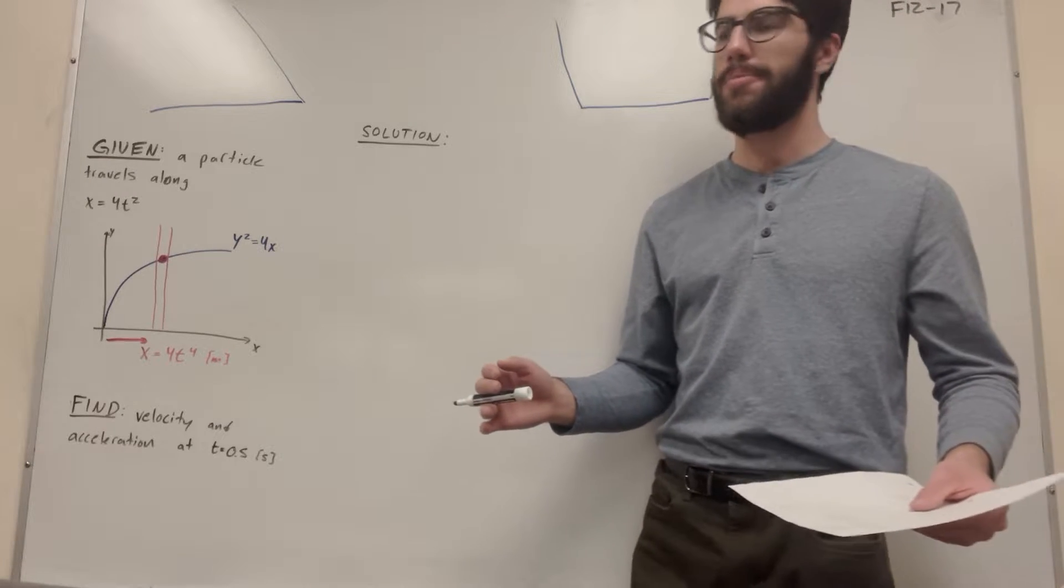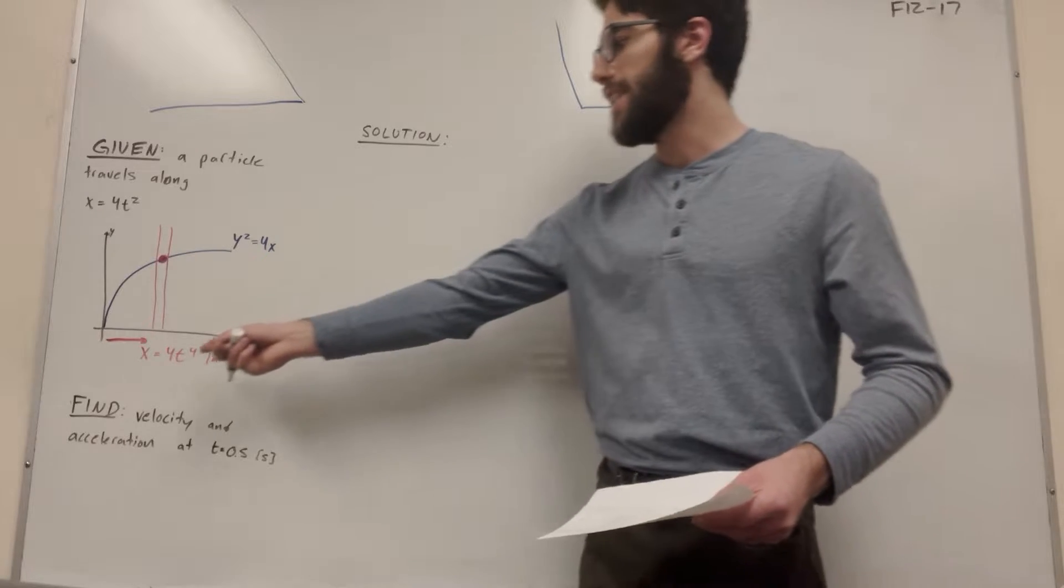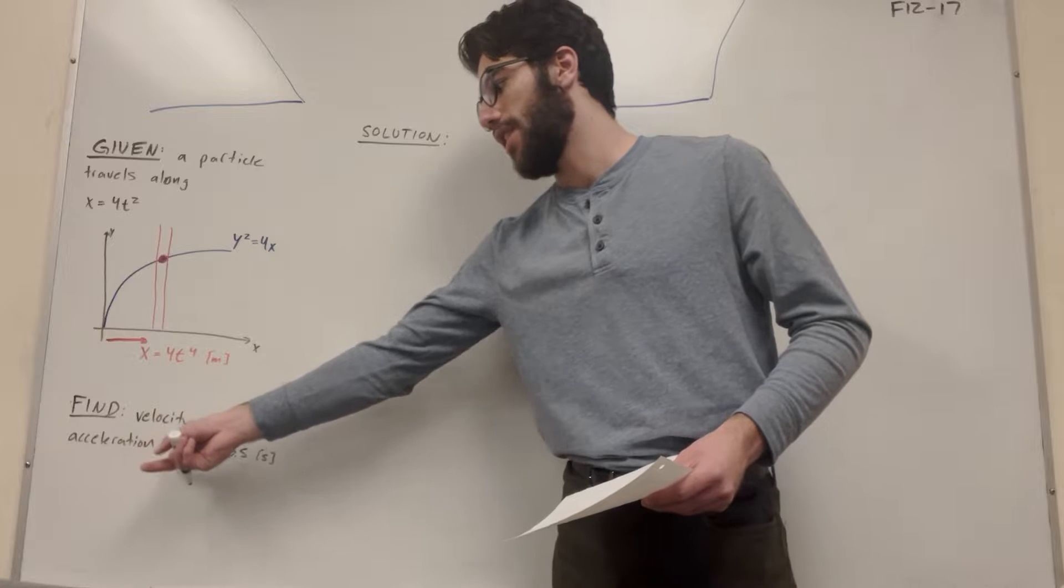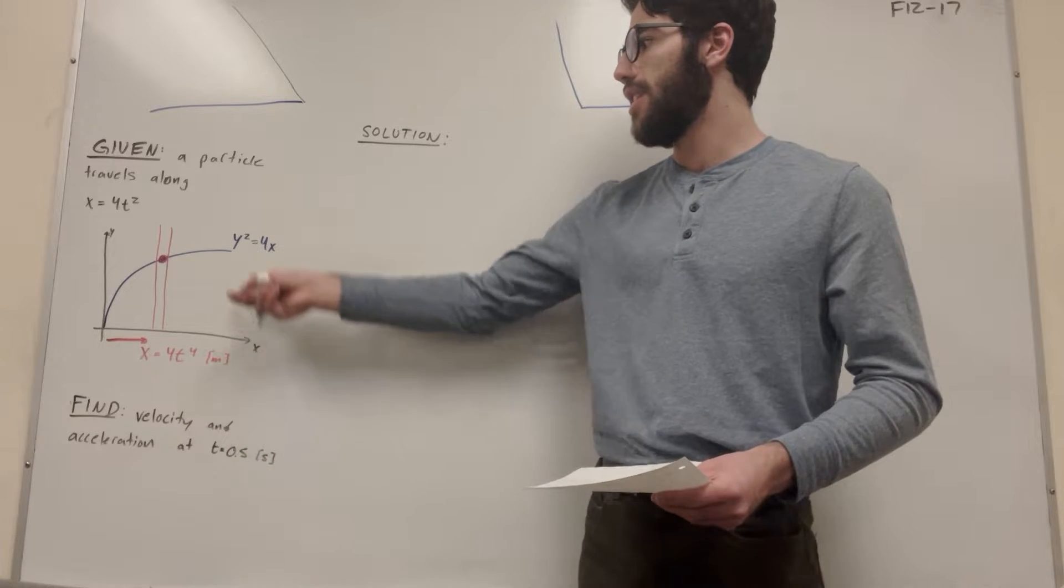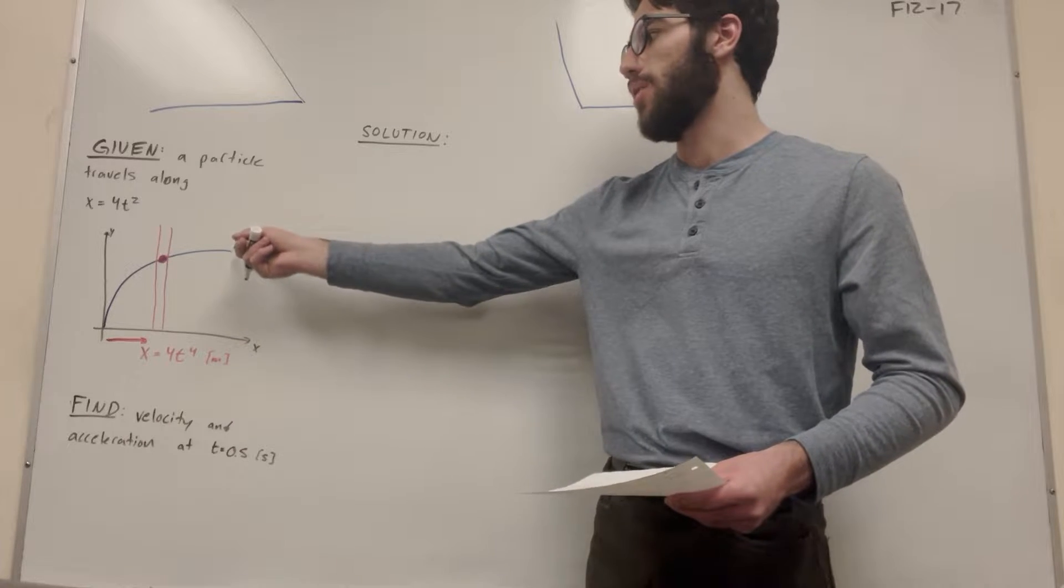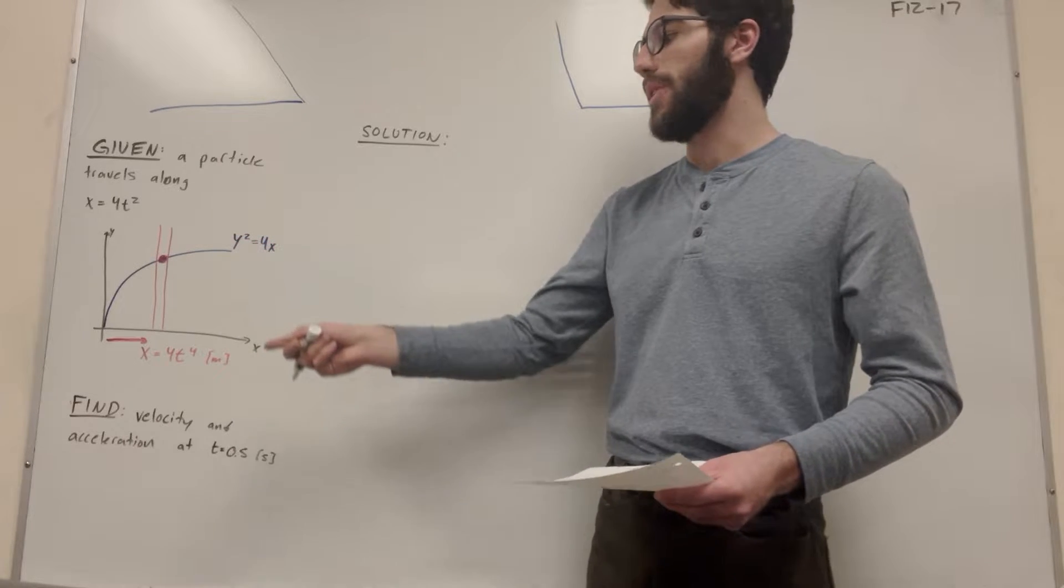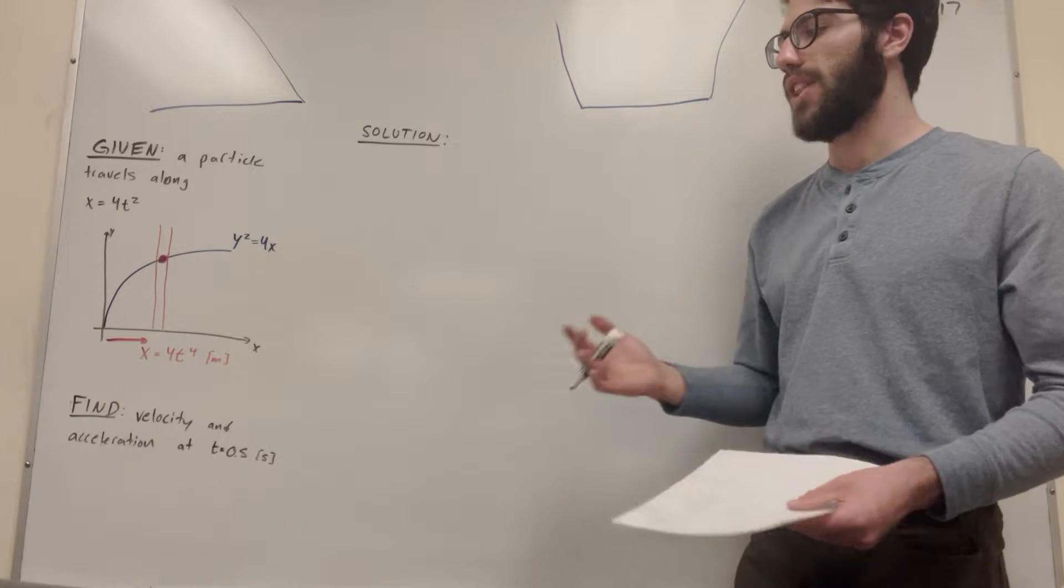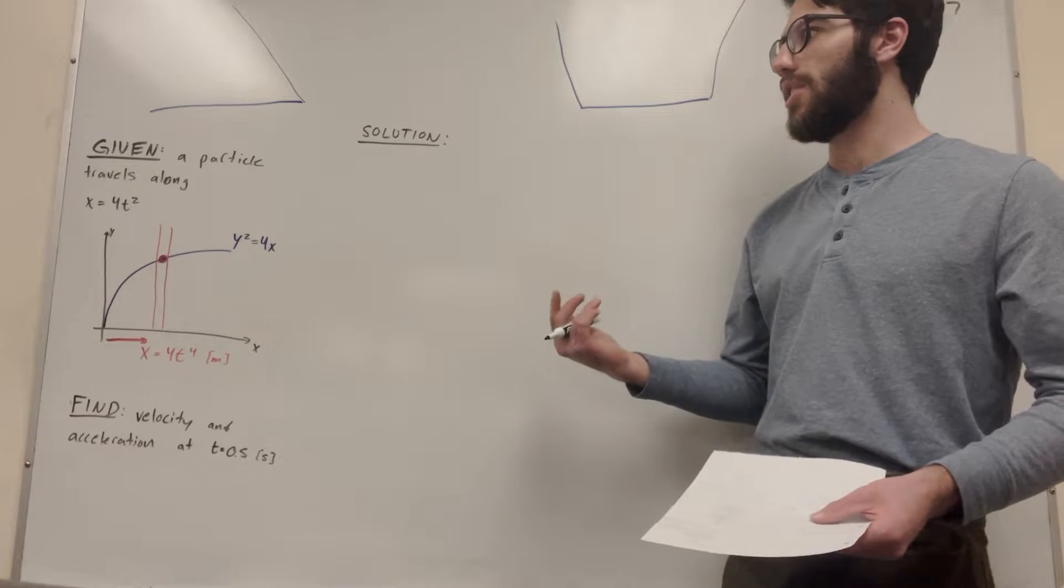So our goal is to find velocity and acceleration at time equals one half of a second. So let's get started. We're given x in terms of t, which is what we want because we want to find velocity and acceleration at t equals 0.5 seconds. But we're given y in terms of x. So our first goal is to try to get y in terms of t so that we can get a position vector in terms of t and then we can take some derivatives to find velocity and acceleration.